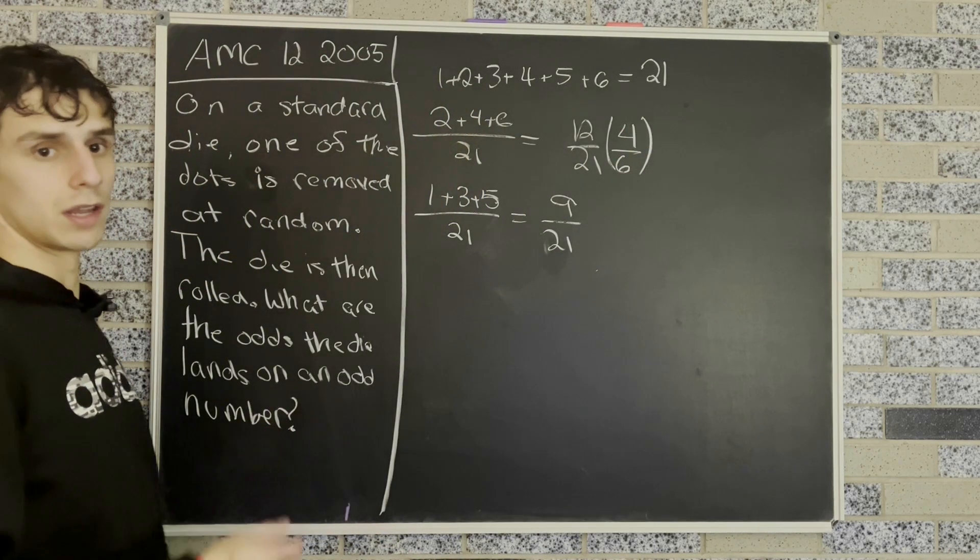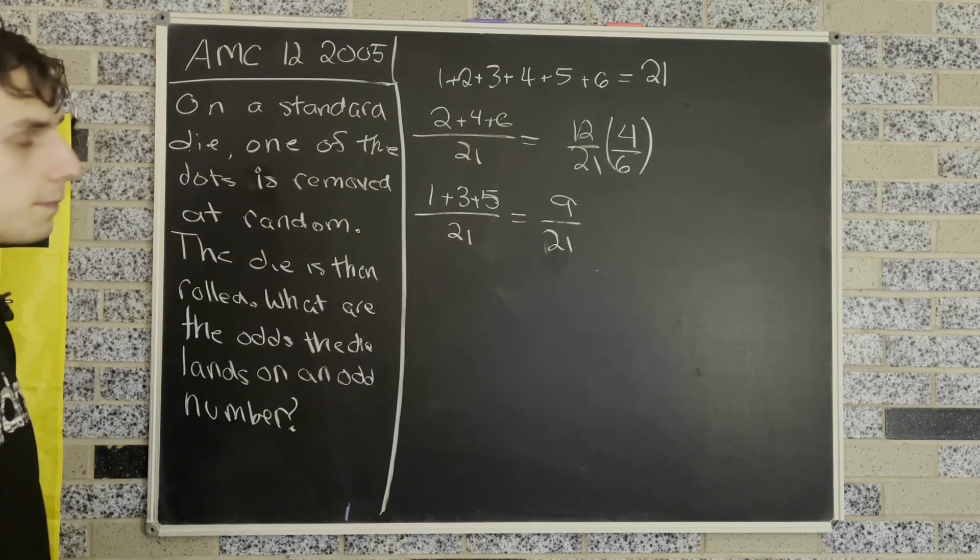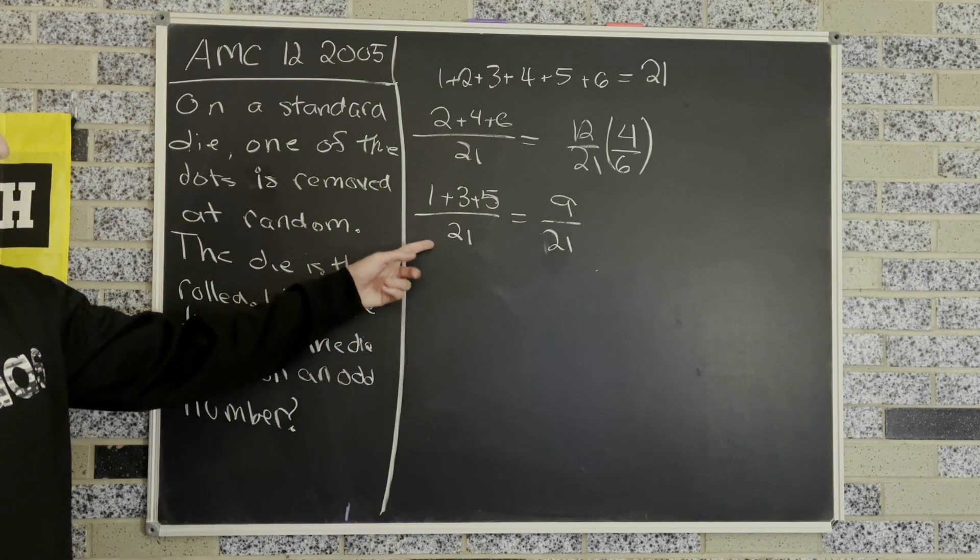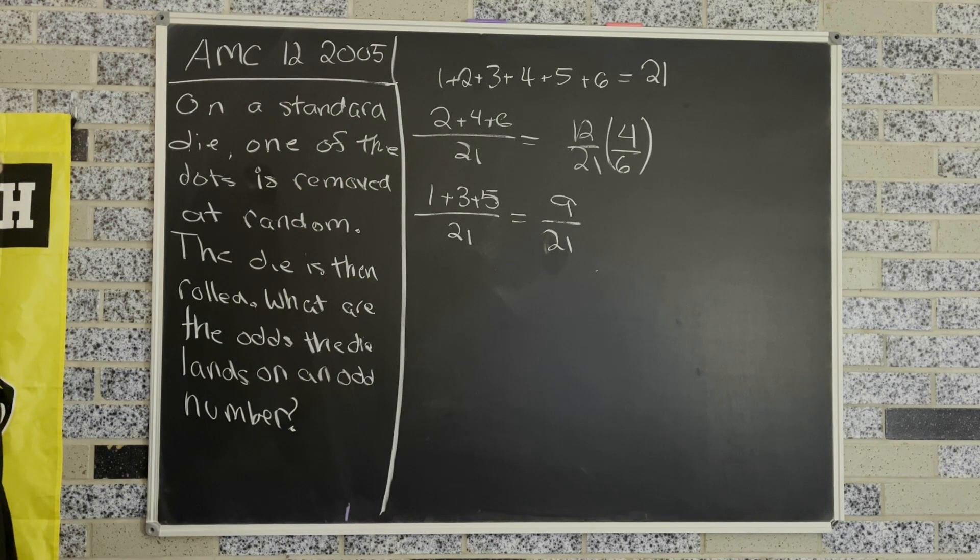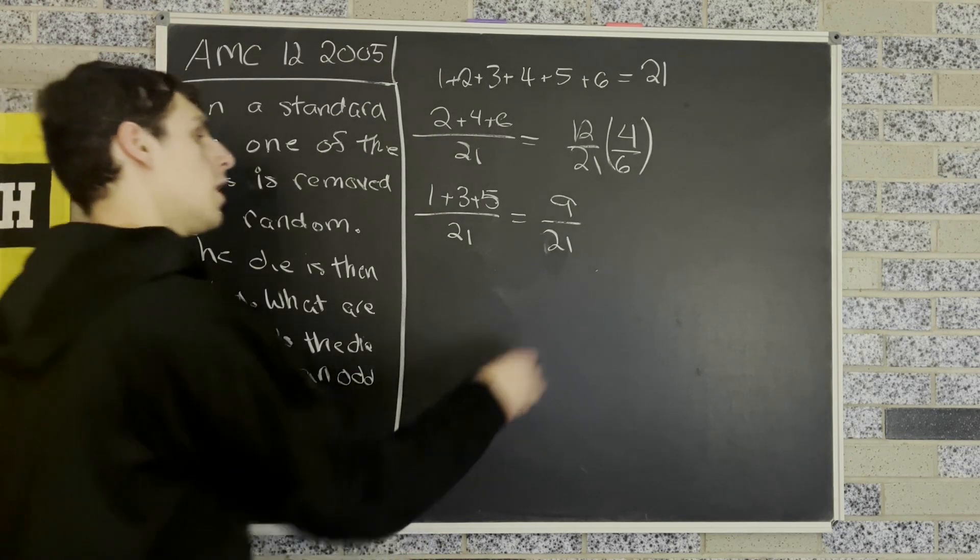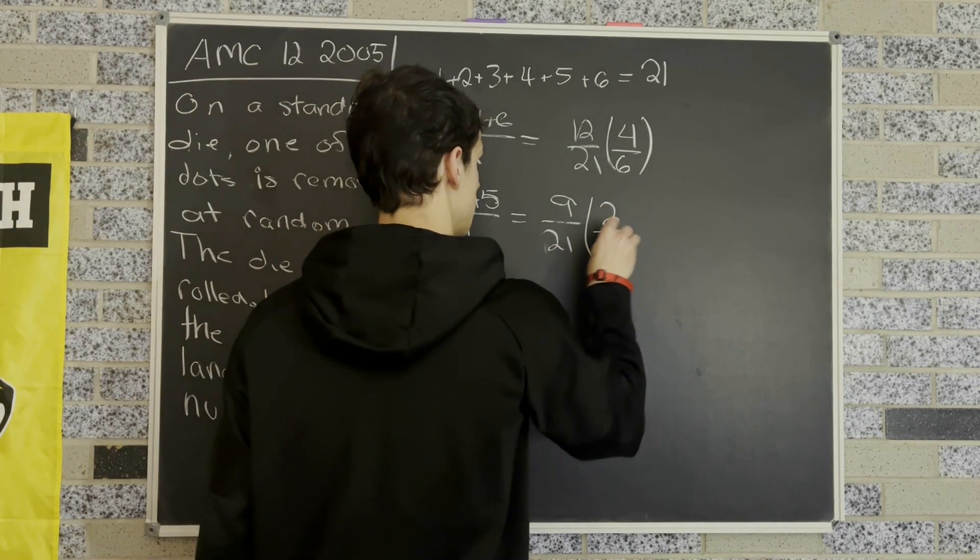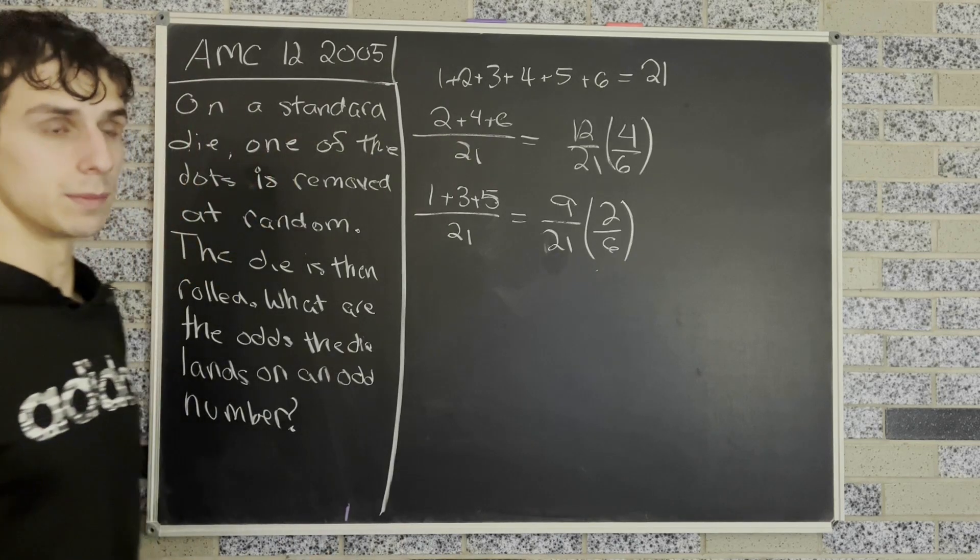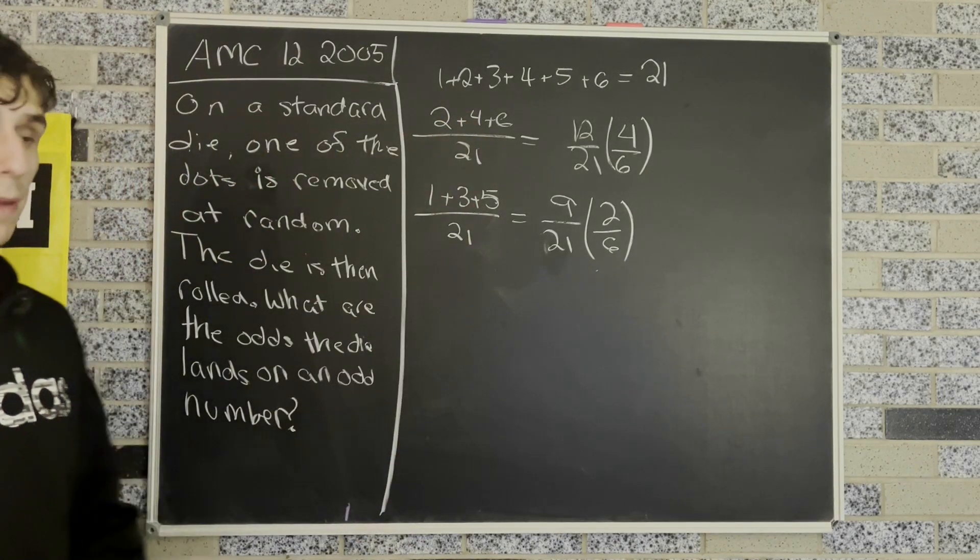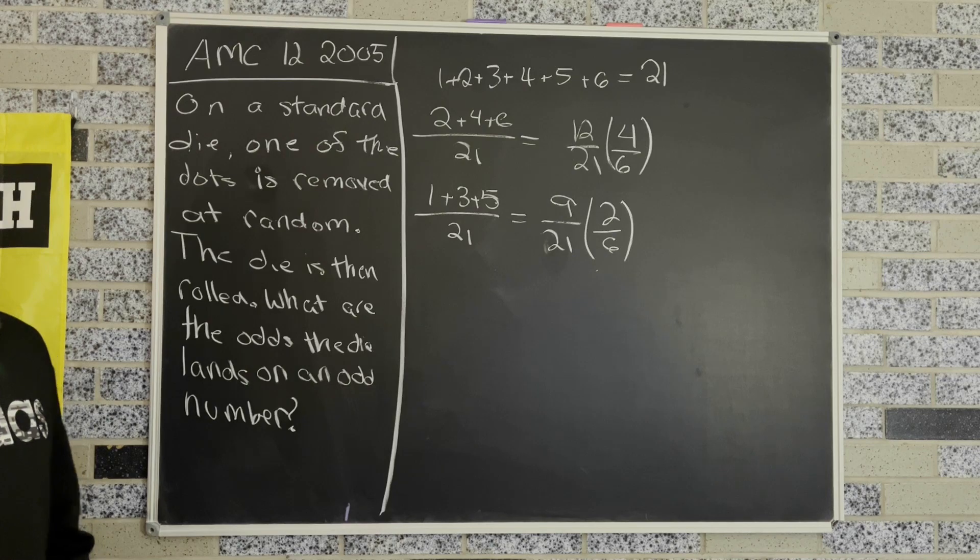That's because we'll have four odd numbers if we remove a dot from an even number. Similarly, we know that the odds that we'll roll an odd number when we remove a dot from an odd number is going to be 2 over 6, and that's because we have three even numbers plus the one even number that we've made by removing a dot from an odd number.